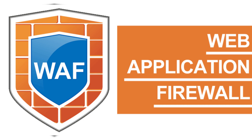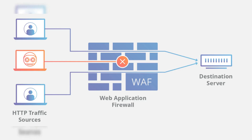A fourth way to test your application security is through the use of a Web Application Firewall (WAF). A WAF is a security tool that can be deployed in front of your application to block malicious traffic and attacks, such as SQL injection or cross-site scripting attacks. A WAF can help protect your application from attacks while you work to address any identified vulnerabilities.